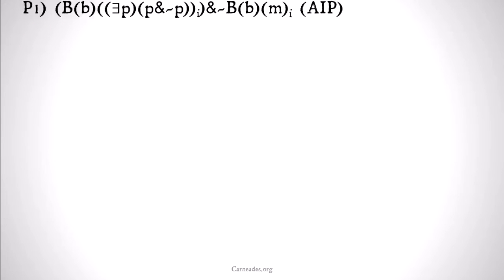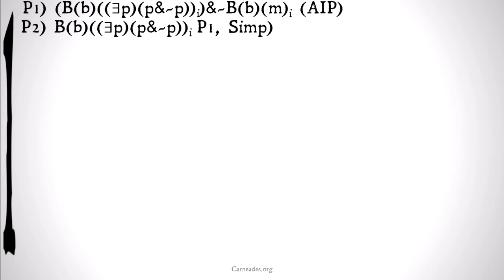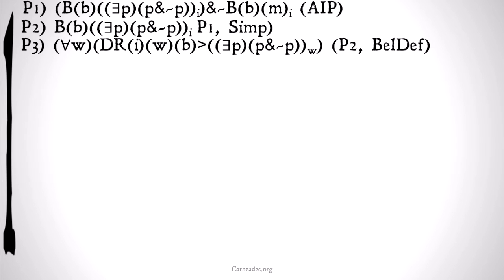Let's take a look at this logically. We're going to do an assumed indirect proof. We assume that Bill believes the law of non-contradiction is false — that there exists some P such that P and not-P is the case in world I — and that it's not the case that Bill believes he is on Mars in world I. We draw our line for the assumed indirect proof. We simplify to: Bill believes the law of non-contradiction is false.